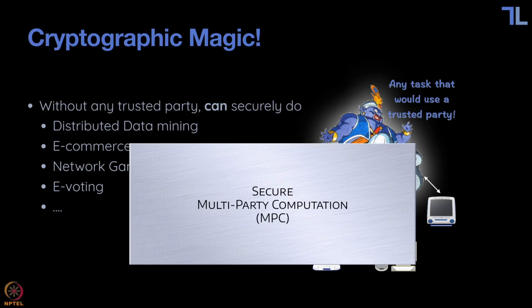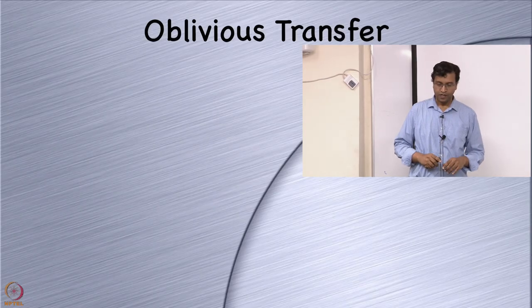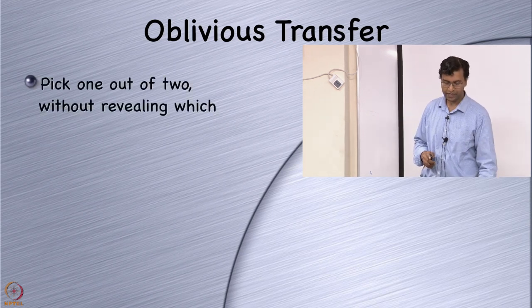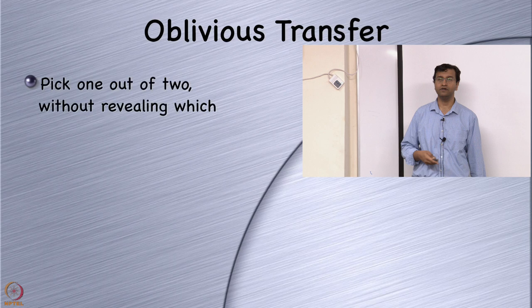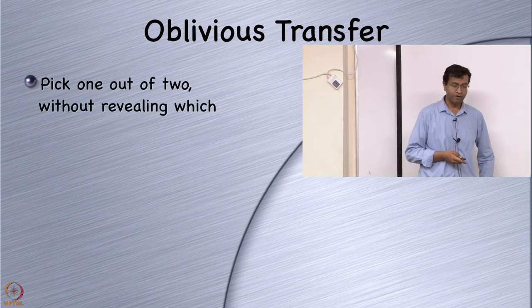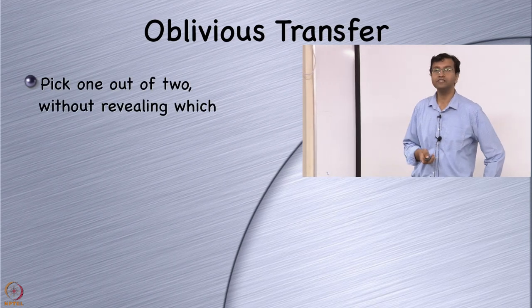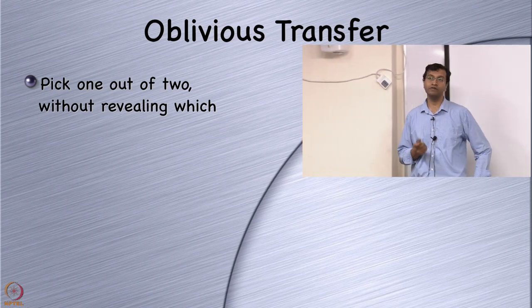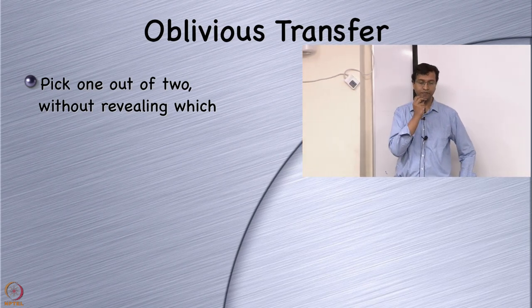This is what secure multiparty computation does — to replace the trusted party with a protocol. Concretely, one very useful but very simple computational task is what's called oblivious transfer.